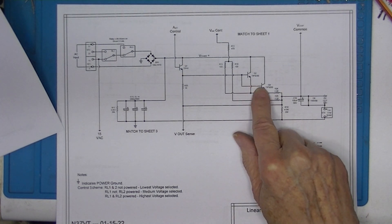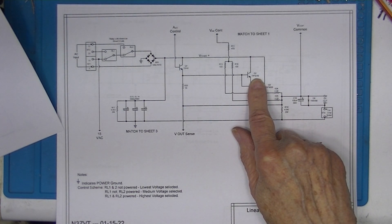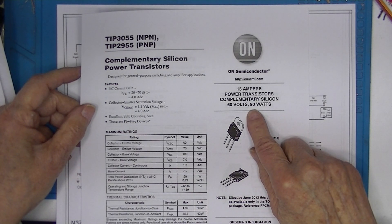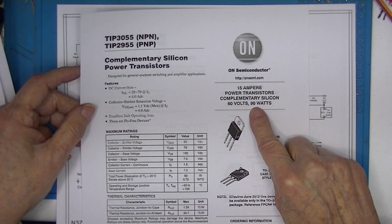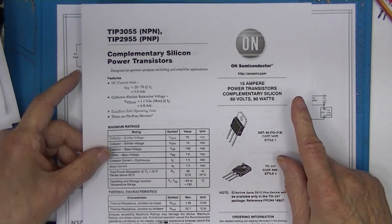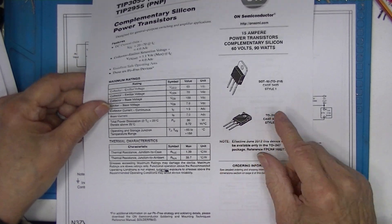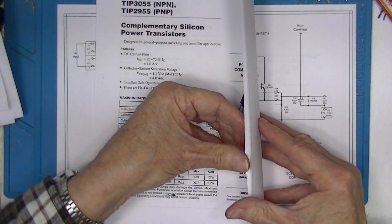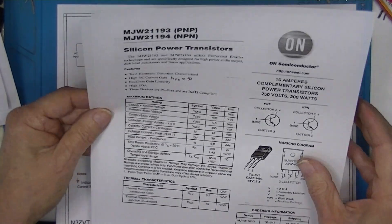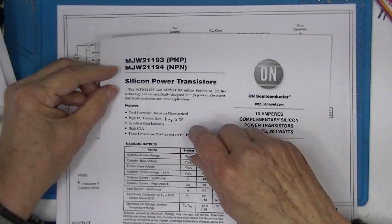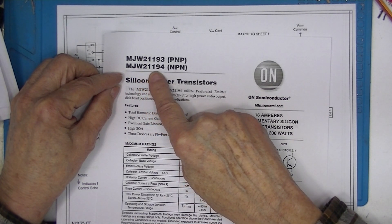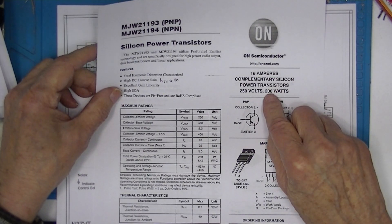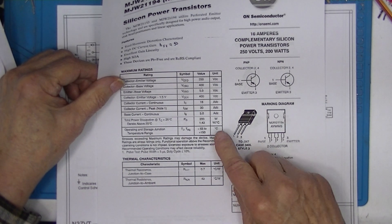The pass circuit uses two tip 3055s. The tip 3055 is rated at 90 watts, two of them, 180 watts, that's not bad, but at 25 degrees C. I've decided to replace them with more robust transistors. I've decided to replace them with more robust transistors. And I've ordered these MJW 21194s, which have a dissipation of 200 watts. But again, that's at 25 degrees C.